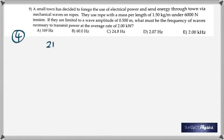All right, number nine. This is a, like somebody said, a hippie town. They're trying to send electrical power as mechanical waves on ropes. That's just a joke, but just for the sake of doing this. Remember that the mass per unit length is given, tension is there, wave amplitude is limited to 0.500 meters. And what's the frequency of the waves necessary to transmit power at the average rate of 2 kilowatts?